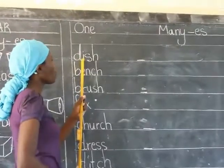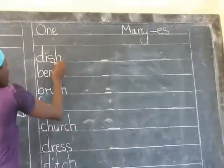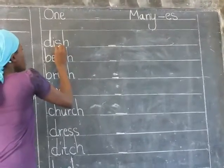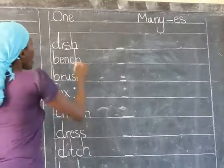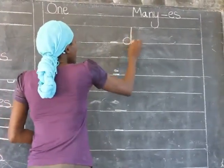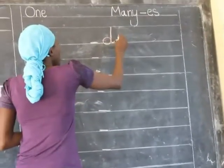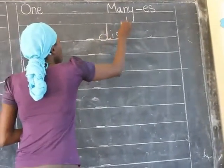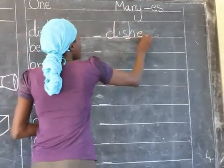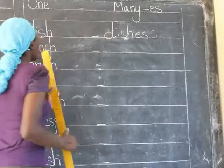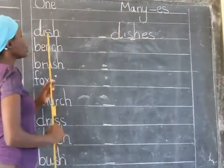Here I have the word dish. It is ending with SH, so I write the whole word as it is: dish. Then I add E and S. So I read: dish, dishes. Dish, dishes.